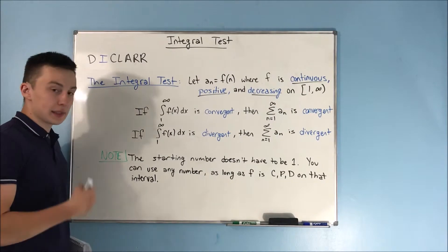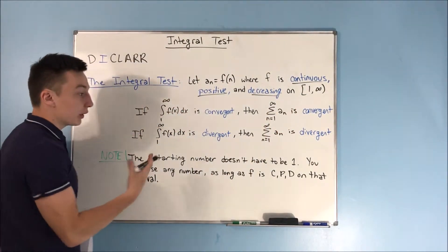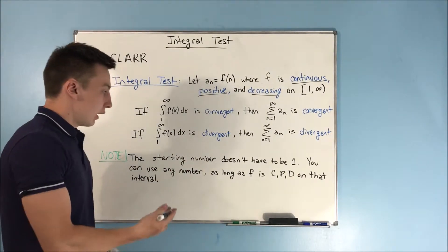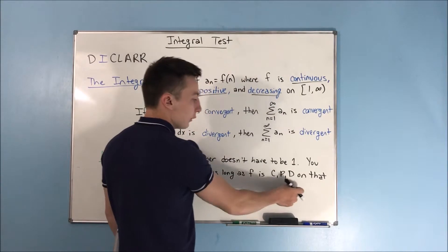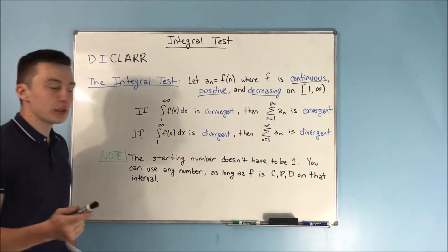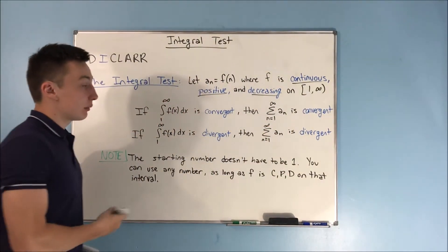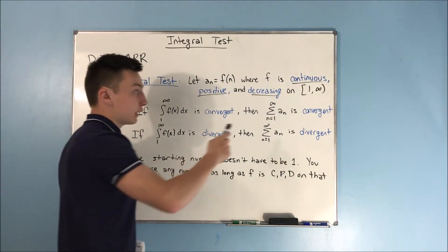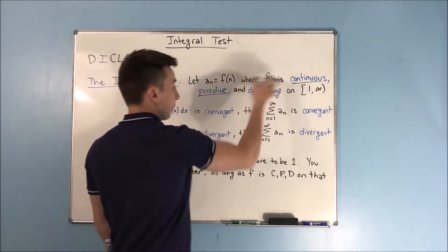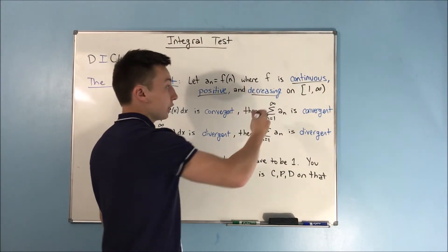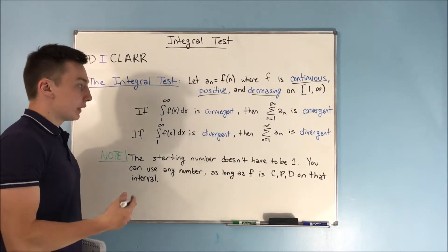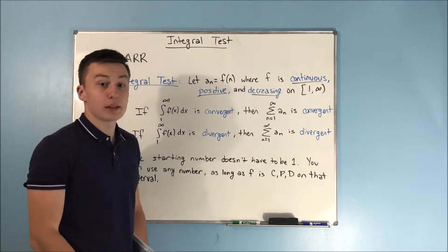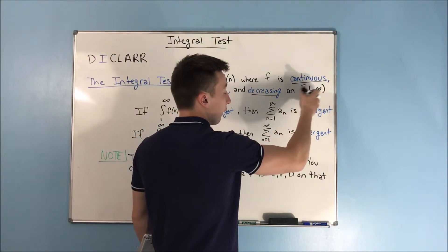A note about that starting number: it doesn't have to be one. You can use any number — two, three, four, five, a hundred, two hundred — just as long as f is continuous, positive, and decreasing on that interval. The reason you wouldn't always start at one is maybe the function is increasing or negative from one to three, so your interval would be from four to infinity. Or maybe there's a discontinuity at two, so you start at three. What matters is this interval that goes out to infinity.